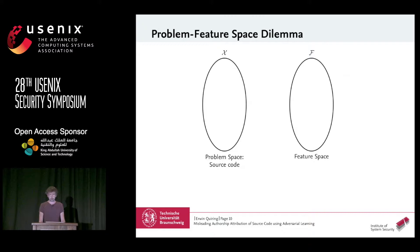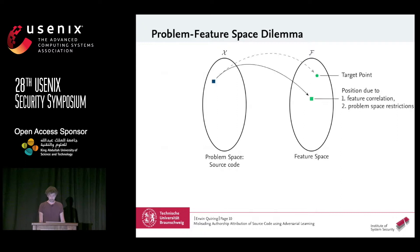From an adversarial learning perspective, we have a quite challenging situation here, different from the image domain which gets a lot of attention. We operate in the problem space — the real world with our source code — while classification happens in the feature space. If we have a target point in the feature space, the exact position to get there is not really controllable, because of feature correlation.